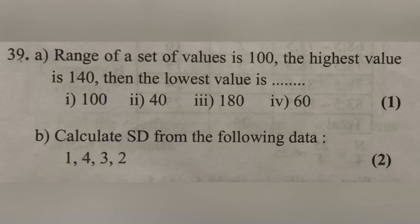The range of a set of values is 100 and the highest value is 140 — then the lowest value can be found using: Range equals Highest minus Lowest, so Lowest equals 140 minus 100 equals 40.